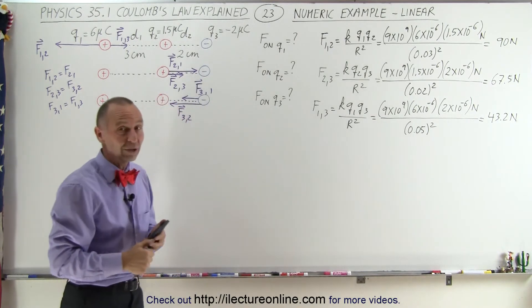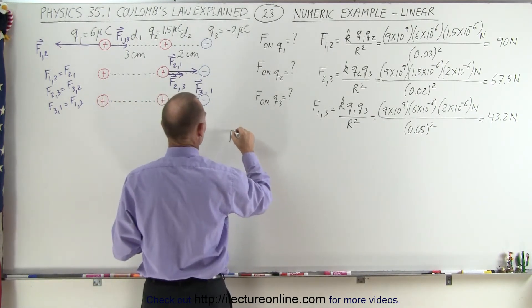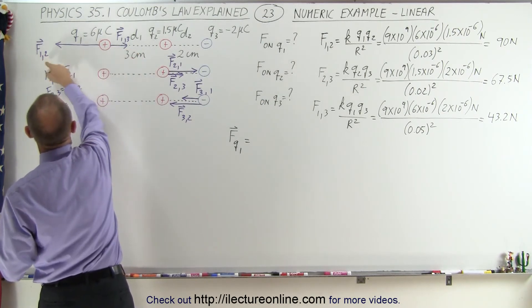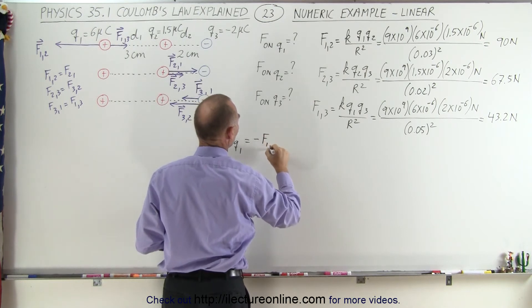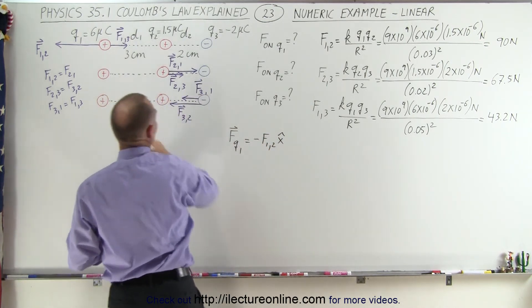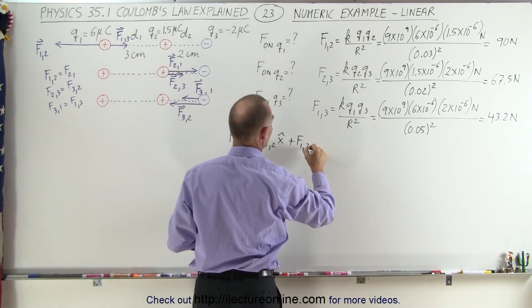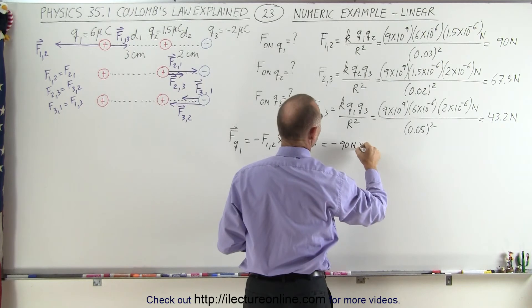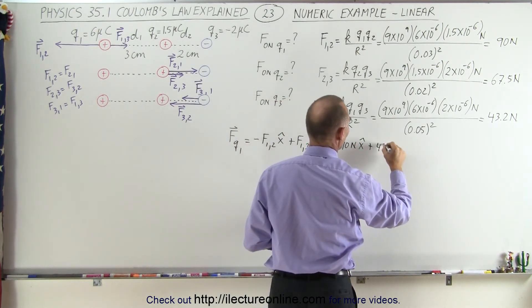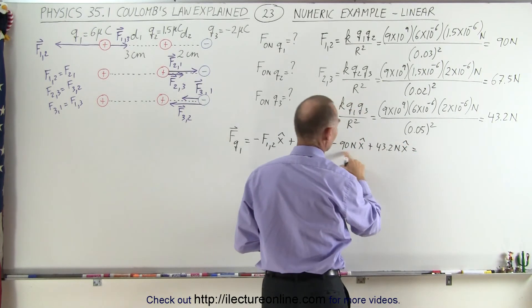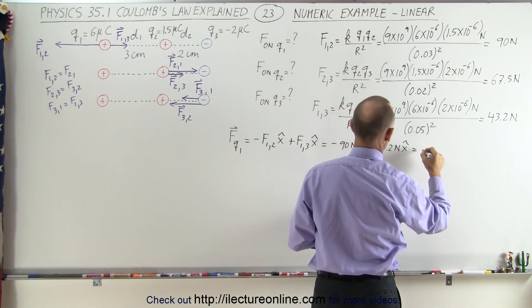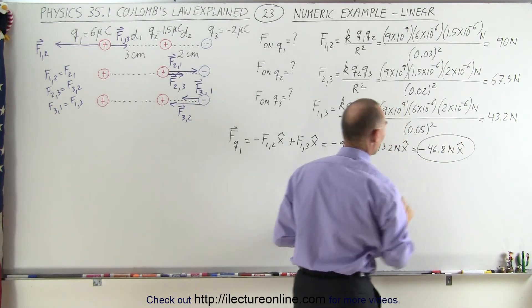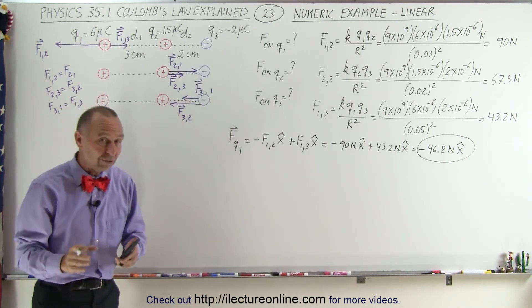Now we're ready to answer the questions. The force on Q1 is a vector quantity. We can see we have a force pulling to the left, F12, so it would be minus F12 in the x direction, plus F13 in the x direction. So that's minus 90 newtons plus 43.2 newtons in the x direction, which equals minus 46.8 newtons in the x direction. That is the force on Q1 due to the presence of Q2 and Q3.